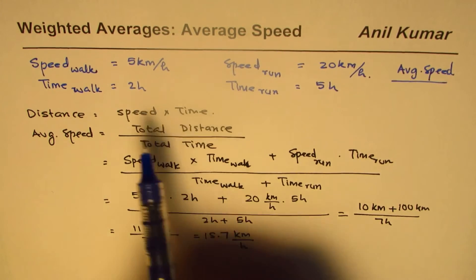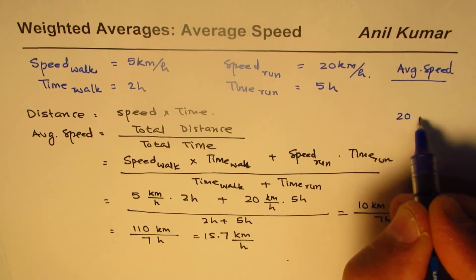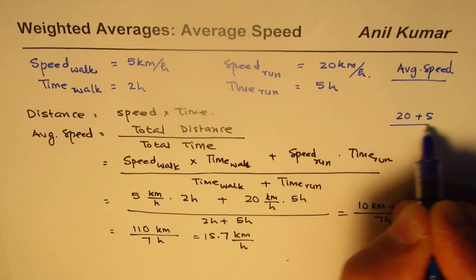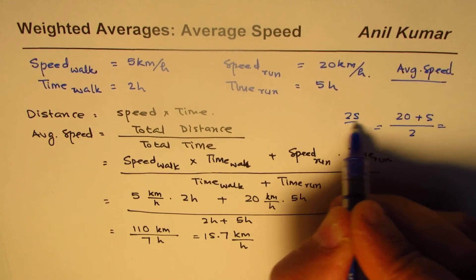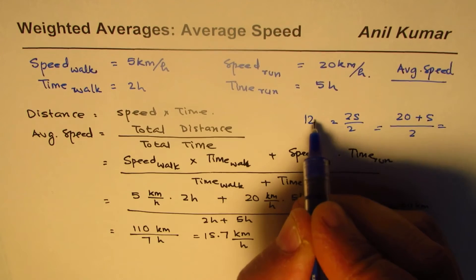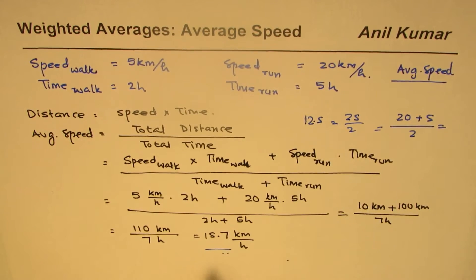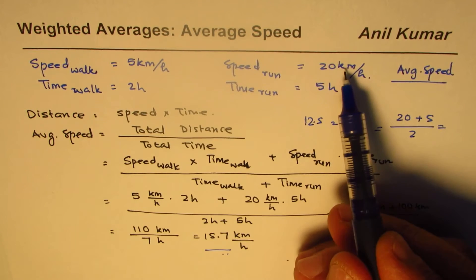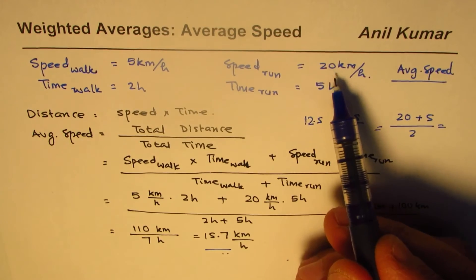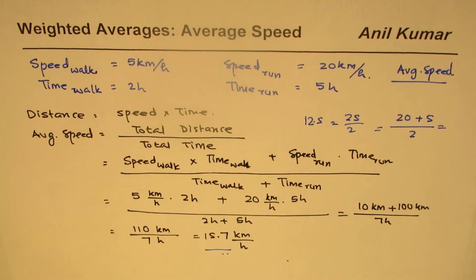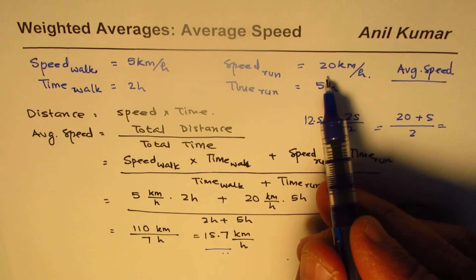You can see it is very different from the simple average of 12.5 you would get by adding 20 and 5 and dividing by 2. The average is much higher in this case since the person runs for a longer period of time and running speed is much higher. This is the concept of weighted averages — since the weight of running is higher, our average is closer to 20.